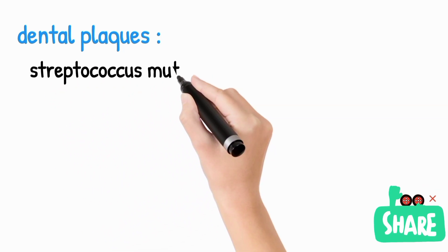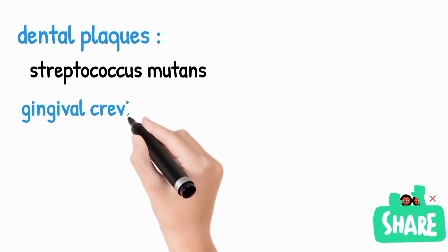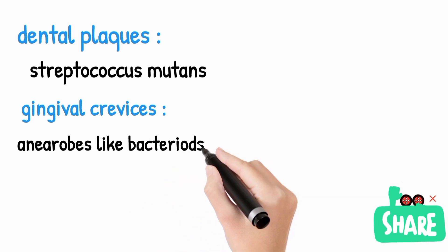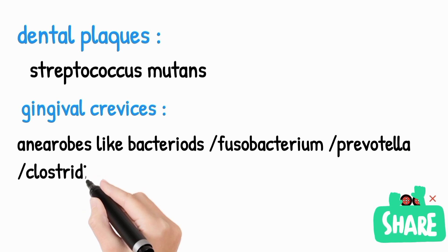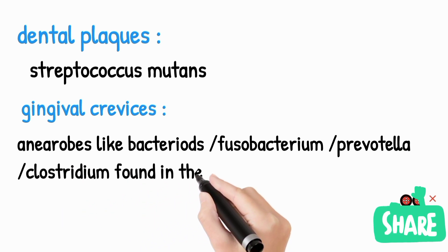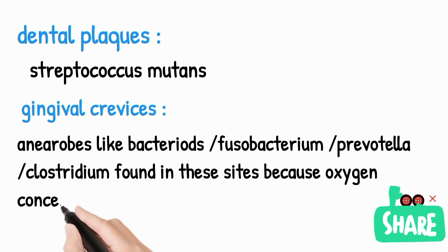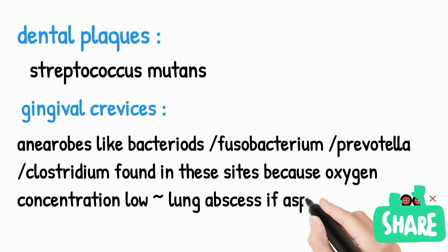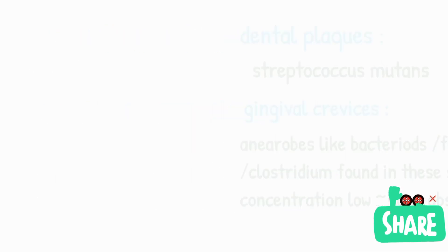In dental plaque pathogenesis, the normal flora responsible is Streptococcus mutans, which has an important role in causing dental plaque or caries. In the gingival crevice there is a low-oxygen environment, so anaerobes like Bacteroides, Fusobacterium, Prevotella, and Clostridium are found there. Remember, when these are aspirated they can cause lung abscess.